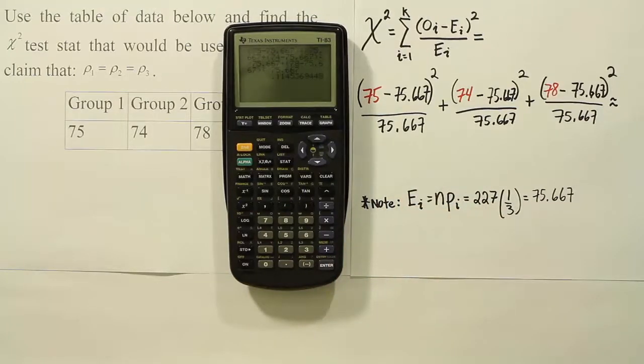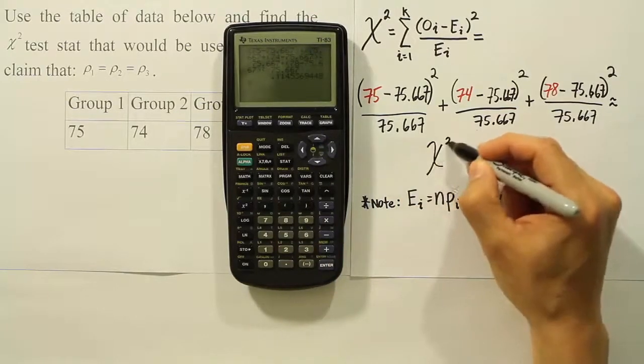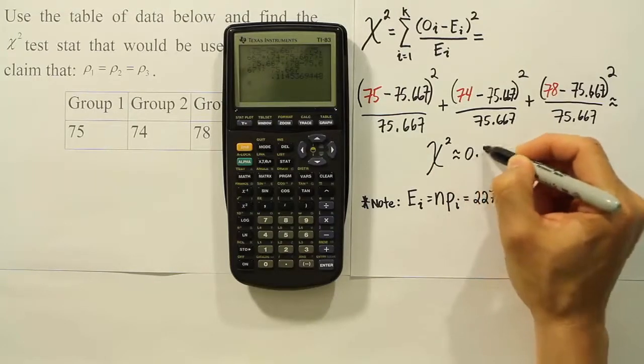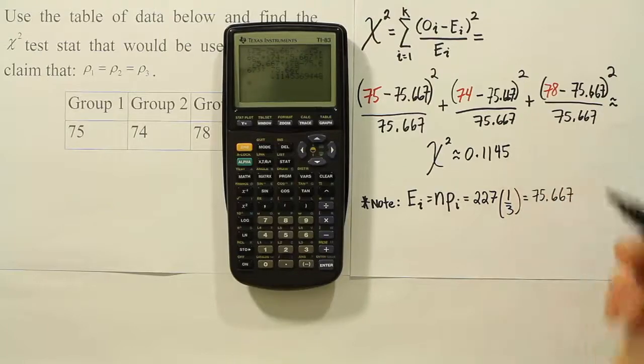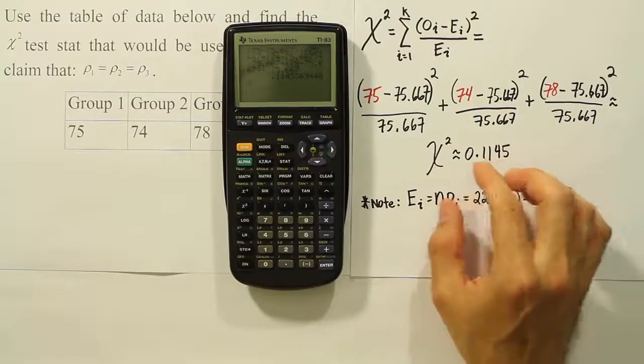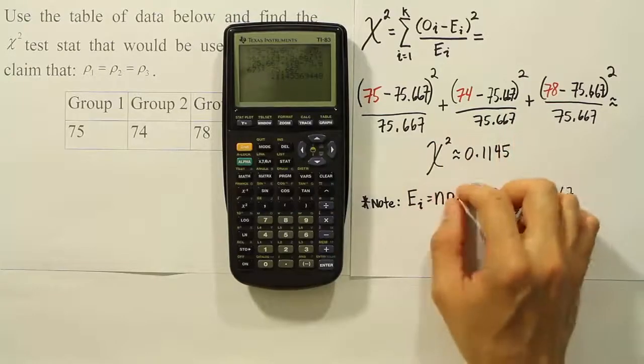So I get the answer approximately that our chi-squared test stat is approximately 0.1145. And that's the solution. And we were able to find it much quicker this way. It's a much more efficient way to work it out than to have to create that table.